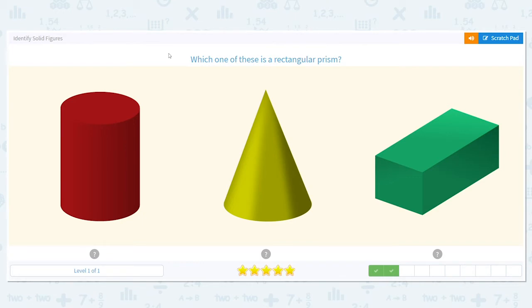Which one of these is a rectangular prism? A rectangular prism is made using some rectangles. That's why rectangular is in its name. So which one of these solid figures has a rectangle or rectangles as part of it? This one does.